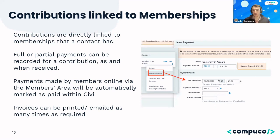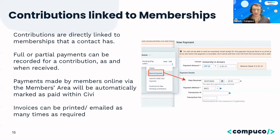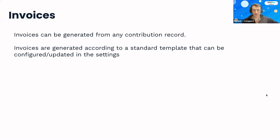The key functionality joining memberships and contributions is that they are linked. If we have a paid membership, CiviCRM automatically creates a contribution connected to it. If the payment is outstanding, the membership shows as pending. When we record the payment and mark the contribution as fully paid, CiviCRM automatically pushes that through to the membership and updates it to current and live. This simplifies tracking — if someone hasn't paid, you can tell straight away from their membership record, giving them an incentive to pay.